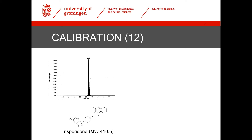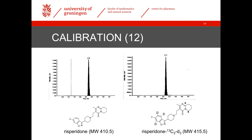If we have a look here at risperidone, it has a molecular weight of 410.5, and we use as an internal standard a molecule that contains three deuterium atoms and two 13C atoms, and that has therefore a molecular weight 5 units higher, at 415.5.